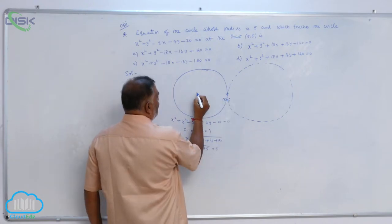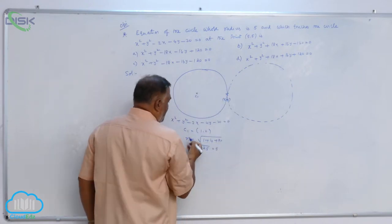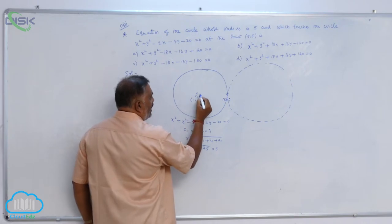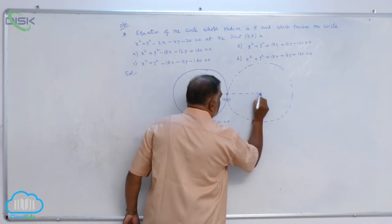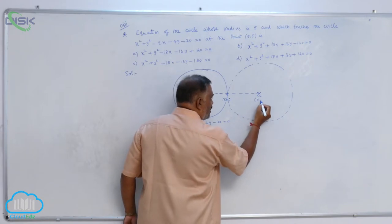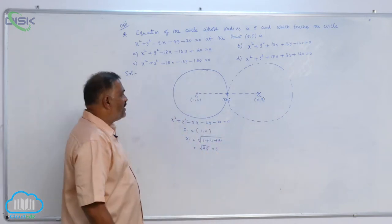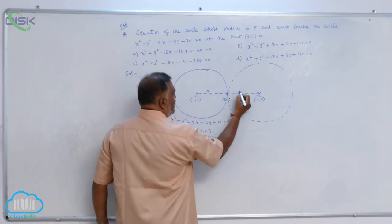(5, 5). Now, this is C₁, the point is (1, 2), and this is going to be center C₂, which we assume is (x, y). Now, this is 5 and this is 5.